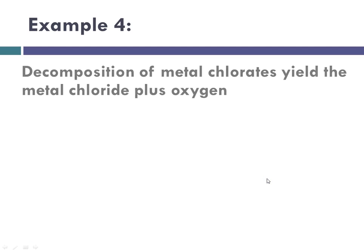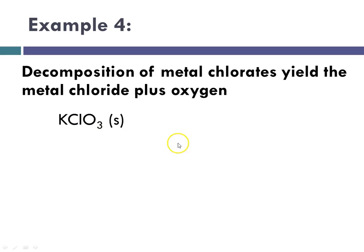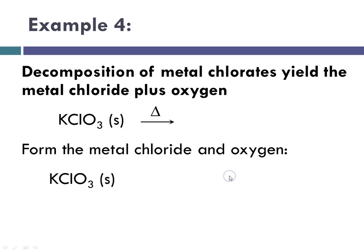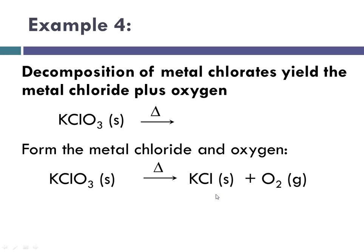Example four: decomposition of metal chlorates to yield the metal chloride plus oxygen. Potassium chlorate will decompose with heat to form the metal chloride and oxygen. So KClO3, which is a solid at room temperature, will decompose to produce KCl plus oxygen.